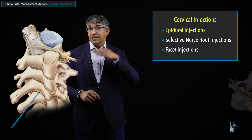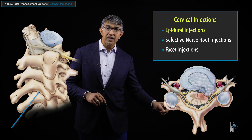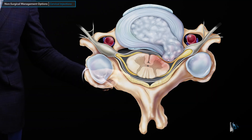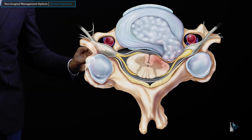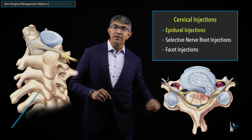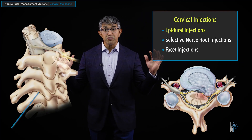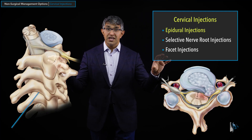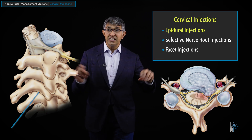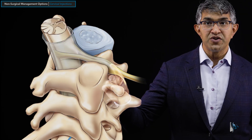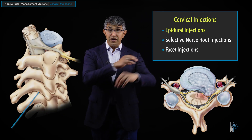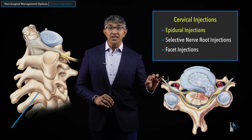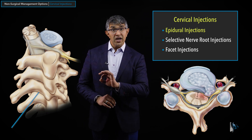Looking at a cross-sectional slice, a needle comes in from the back and goes into the space around the dura. The dura is like the wrapping of the spinal cord, and the nerves are all encapsulated in that as well. There's a root sleeve around the nerve, kind of like the sleeve of a jacket. When they do an injection, they're trying to get into the space right around the dura.